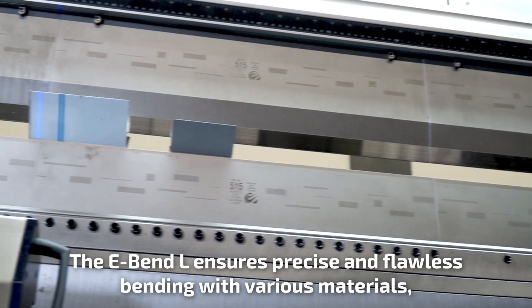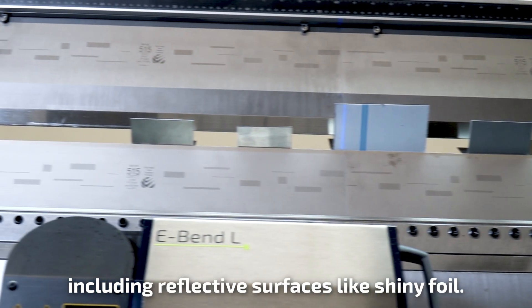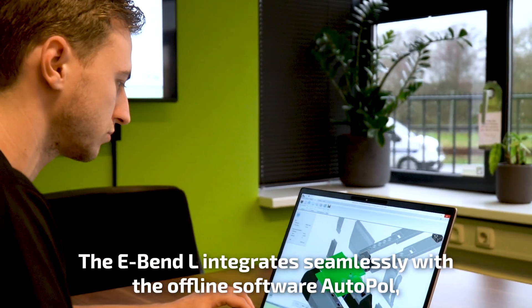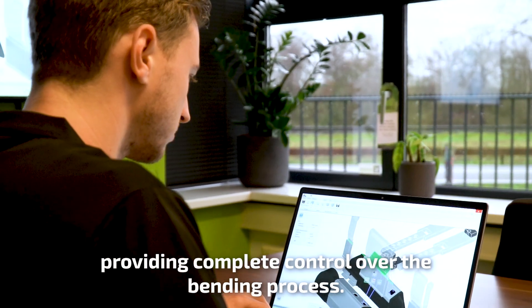The E-Bend L ensures precise and flawless bending with various materials, including reflective surfaces like shiny foil. The E-Bend L integrates seamlessly with the offline software AutoPoll, providing complete control over the bending process.